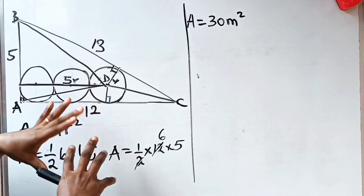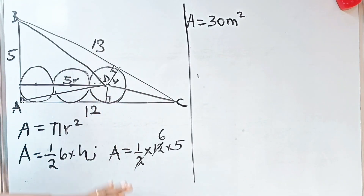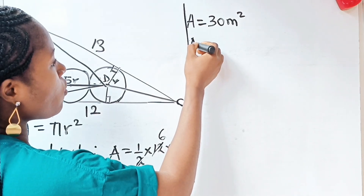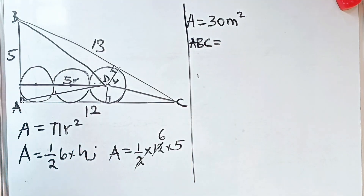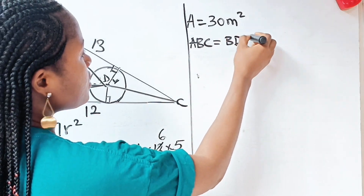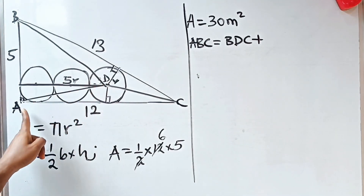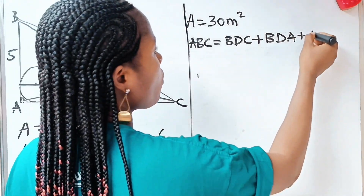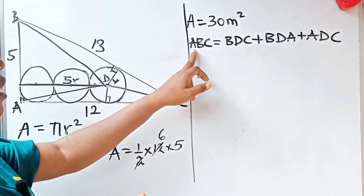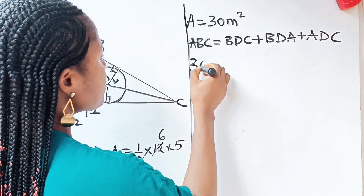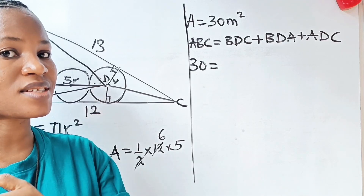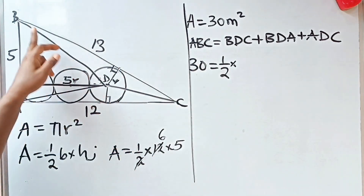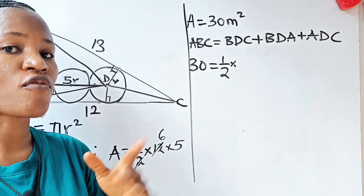If we add the areas of these 3 triangles together, we get the area of the whole triangle ABC, which is equal to 30. So: area of ABC equals area of triangle BDC plus area of triangle BDA plus area of triangle ADC equals 30. Now, the base of triangle BDC is 13 — you can see why we had to get the value of our hypotenuse.